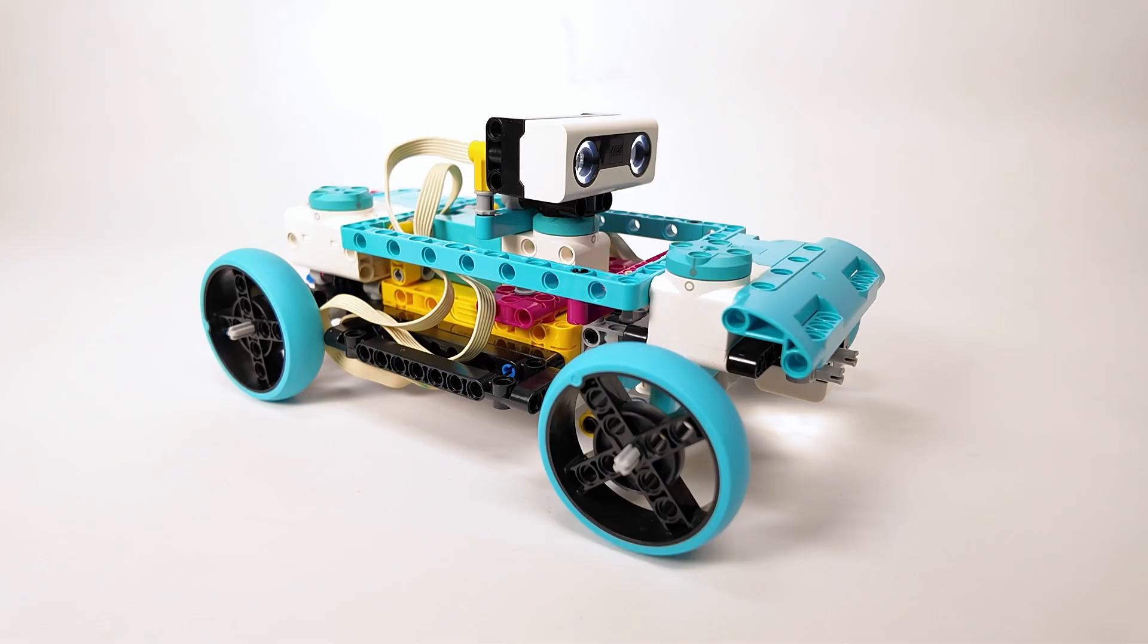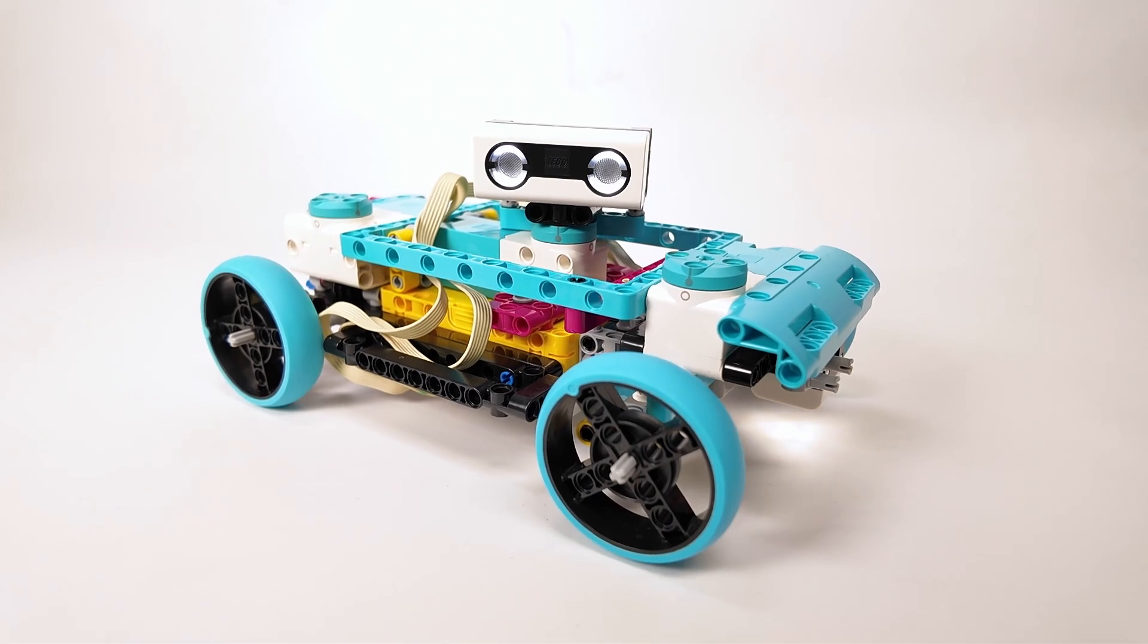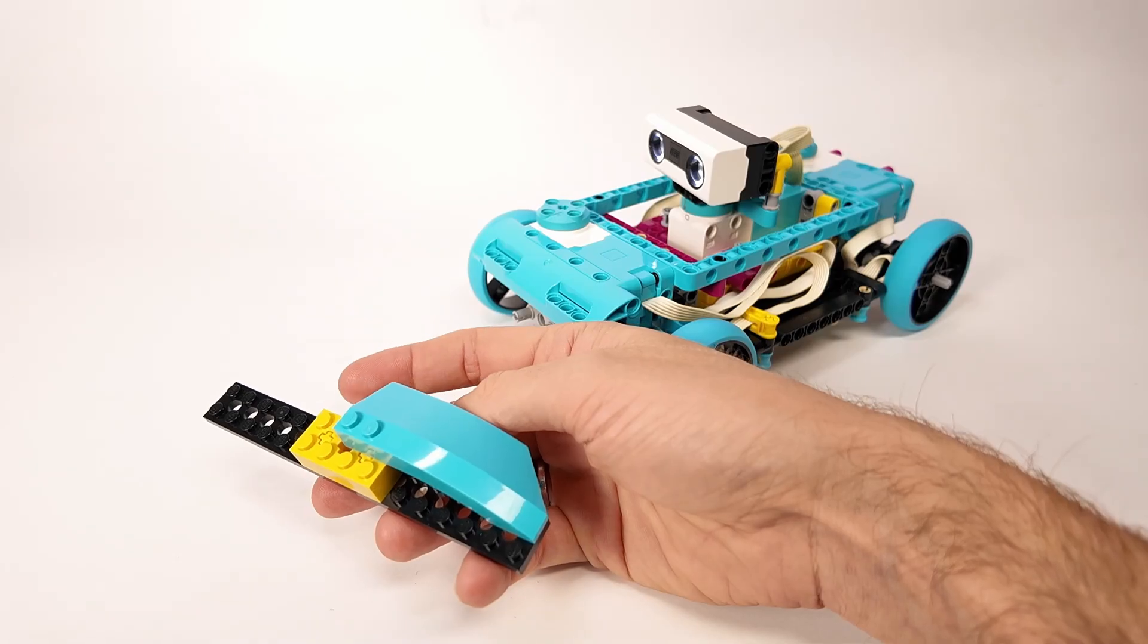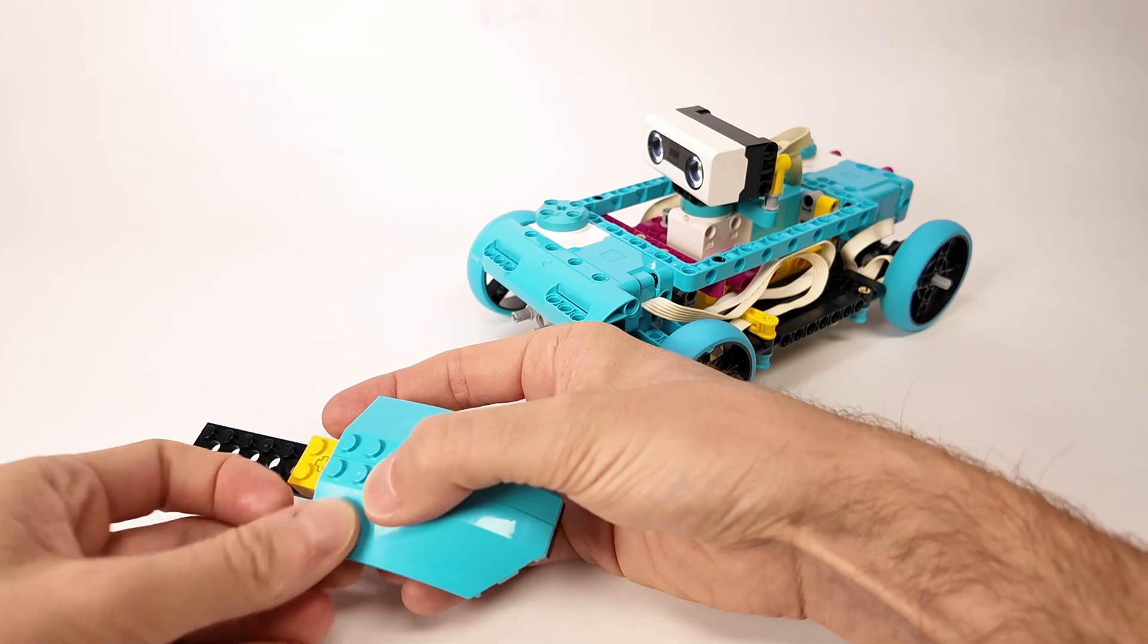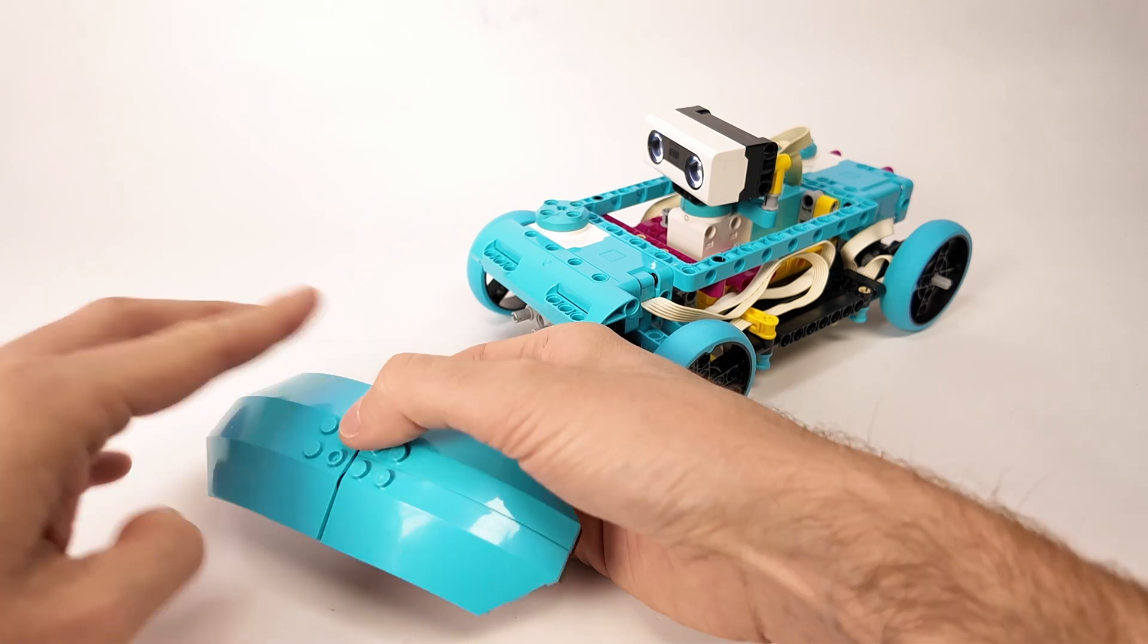And here it is, with big googly eyes made from the spike distance sensor. Time to build the body, using these pieces which are pretty weird in a robotics kit. Well, what do you think?